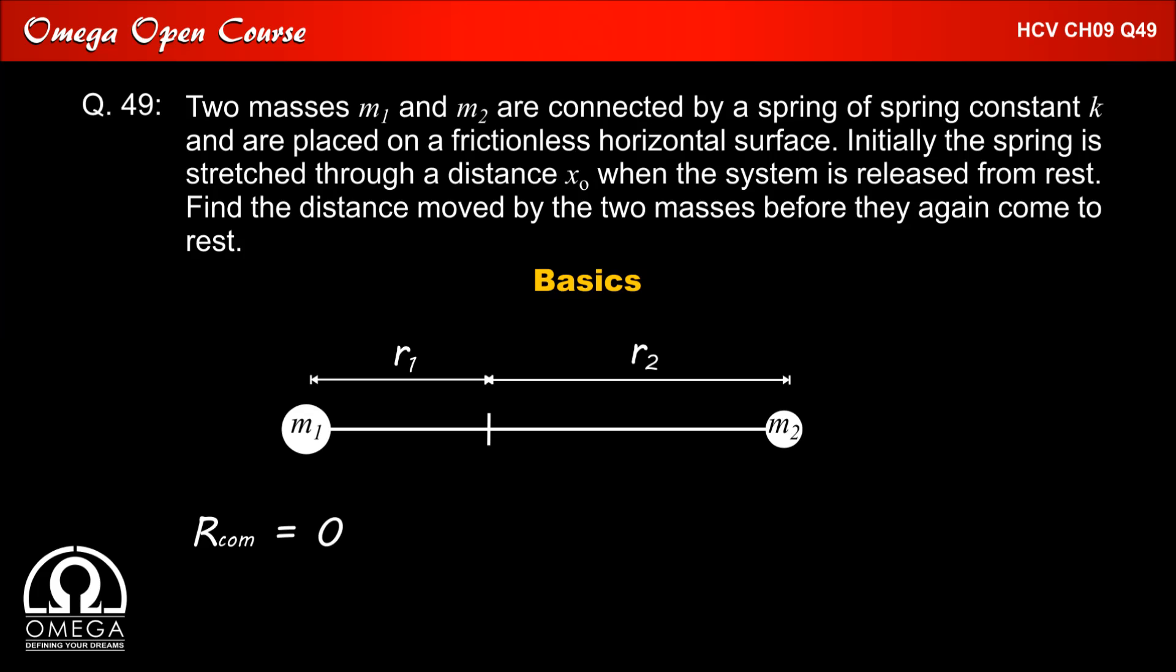If we set our origin at center of mass, then the distance of center of mass is zero. Therefore, M2 R2 minus M1 R1 divided by M1 plus M2, that is the position of center of mass, must be equal to zero. This implies M1 R1 is equal to M2 R2.